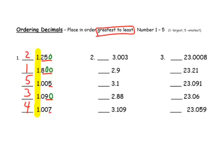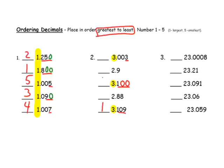On the next one, you've got to look at the whole numbers first, so be careful. I see that three of them start with 3, so I'm going to focus on those three numbers first. This one's in the thousandths, and I'm going to change them all so they're all in the thousandths, just by adding some zeros. Now it's really easy to compare: this is 3 thousandths, 100 thousandths, 109 thousandths. So 109 would be the largest, followed by 100, followed by 3 thousandths.